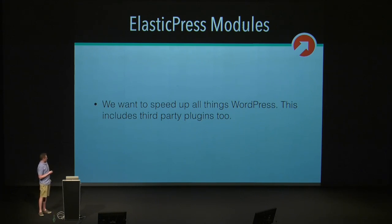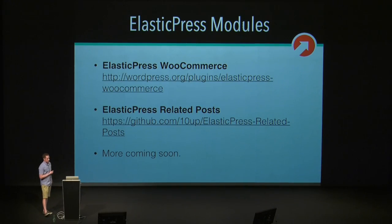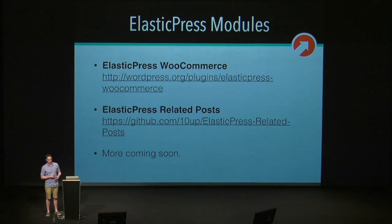Another really cool thing with ElasticPress is we have modules. We want to speed up all things WordPress, and this includes plugins. Two of our modules right now: we have ElasticPress WooCommerce — great for e-commerce queries where you want to find products that are either blue or red, greater than a certain price, in certain categories. Doing those types of queries with WordPress just isn't really possible right now, but ElasticPress makes them fast. We can also find related posts using Elasticsearch's relevancy calculations. Anyone in the community is encouraged to build their own modules, and more will be coming soon.